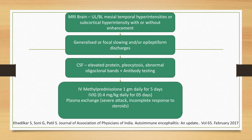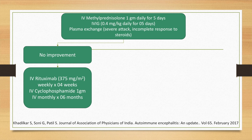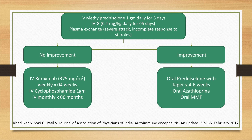We must start IV methylprednisolone 1 gram per day for 5 days, or intravenous immunoglobulin at 0.4 mg per kg daily for 5 days. Plasma exchange may be considered in patients with a severe attack or incomplete response to steroids. If there is no improvement, we can consider IV rituximab 375 mg per m² per week for 4 weeks, or IV cyclophosphamide 1 gram IV every month for 6 months. If there is improvement, we give oral prednisolone with a taper for 4 to 6 weeks, or oral azathioprine or oral mycophenolate mofetil.